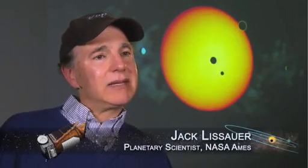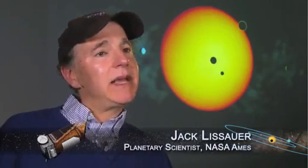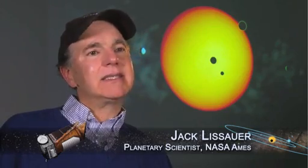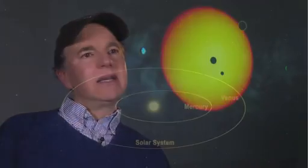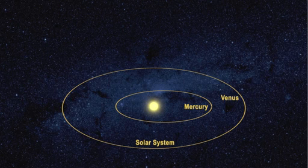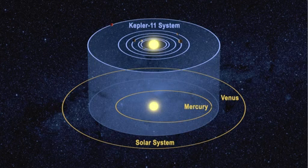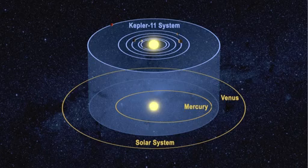The Kepler 11 planetary system is amazing. It's amazingly compact, it's amazingly flat. There's an amazingly large number of big planets orbiting close to their star. We didn't know such systems could even exist.